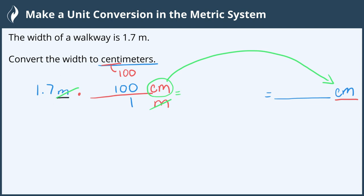Let's go ahead and multiply our numbers. 1.7 times 100. When we multiply by a multiple of 10, this means that I move the decimal at the same number of place values as zeros.